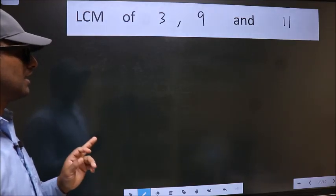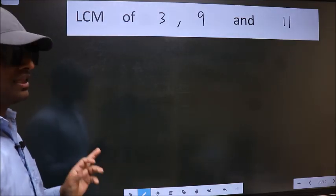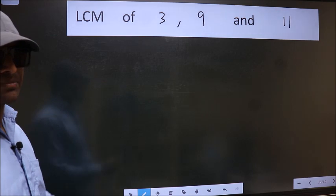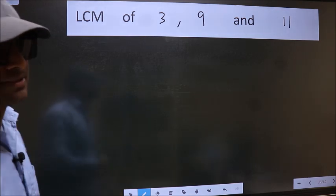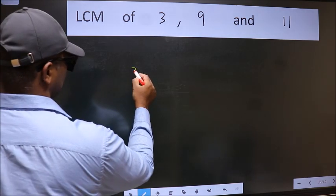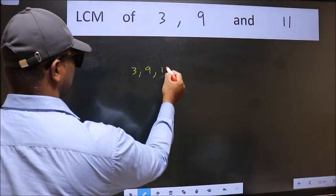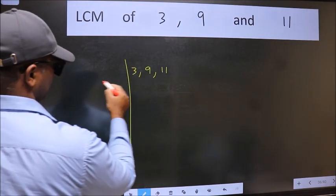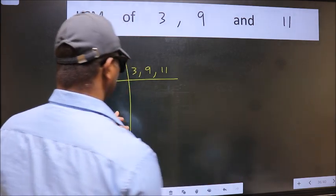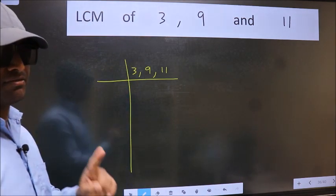LCM of 3, 9, and 11. To find this LCM, we should frame it in this way: 3, 9, 11. This is your step 1.